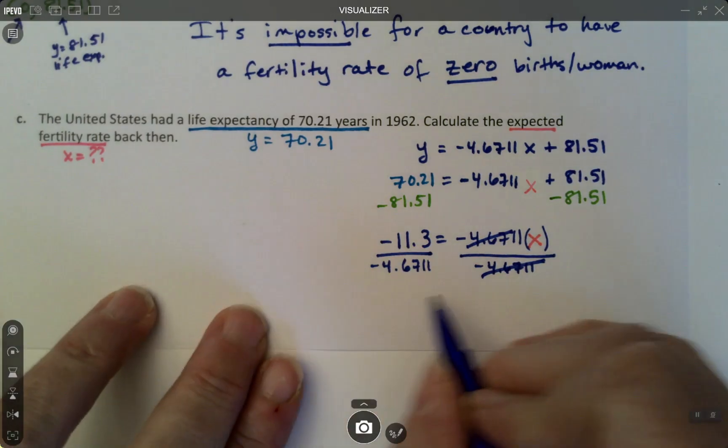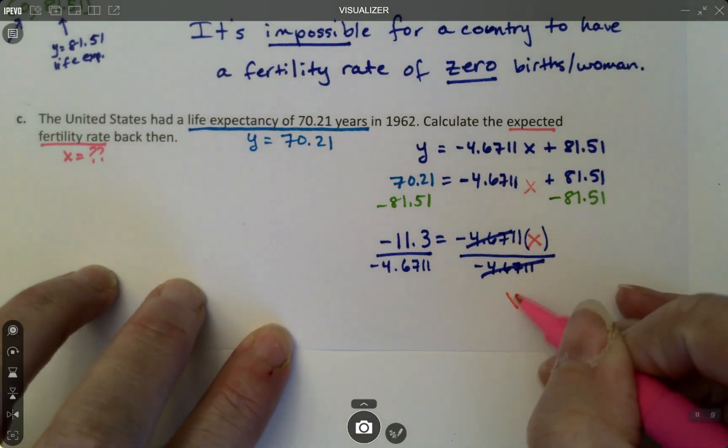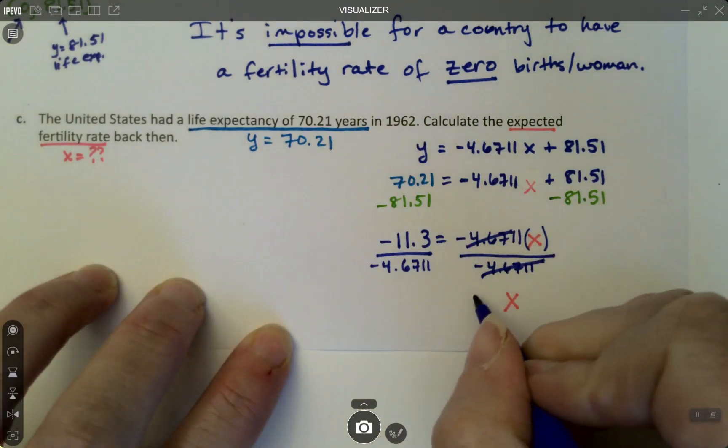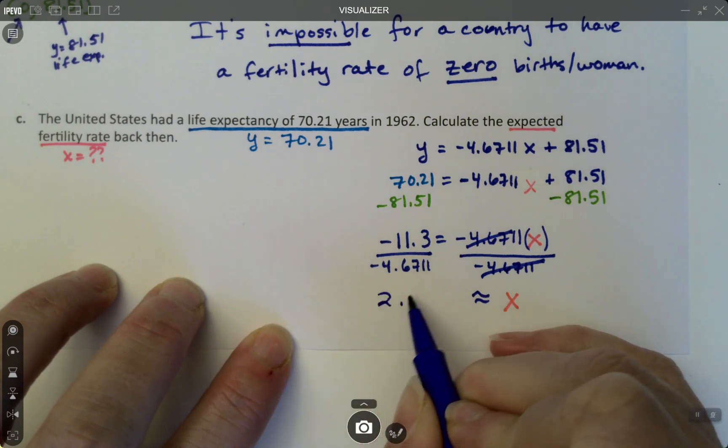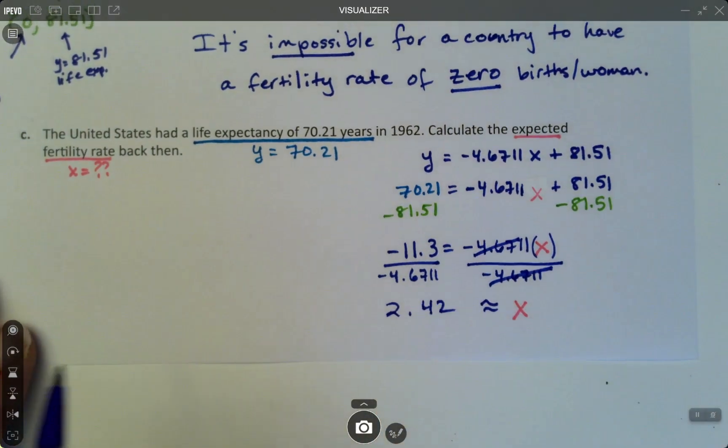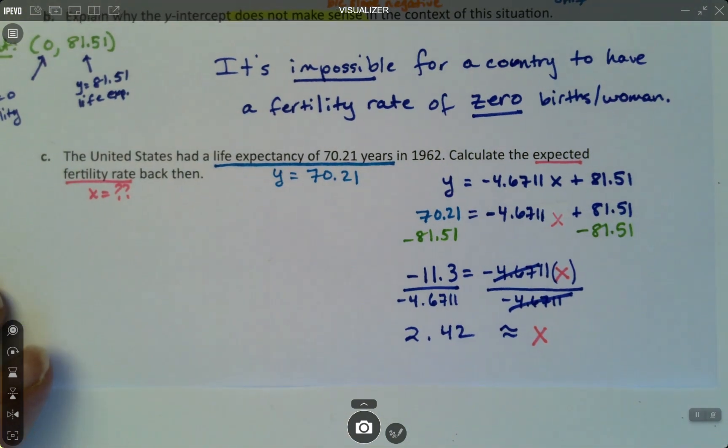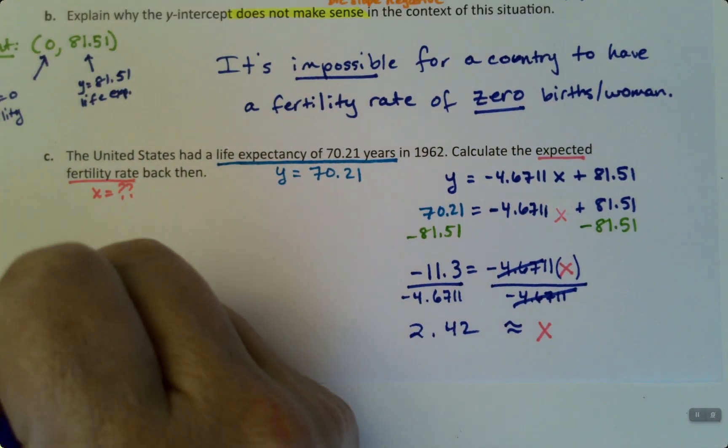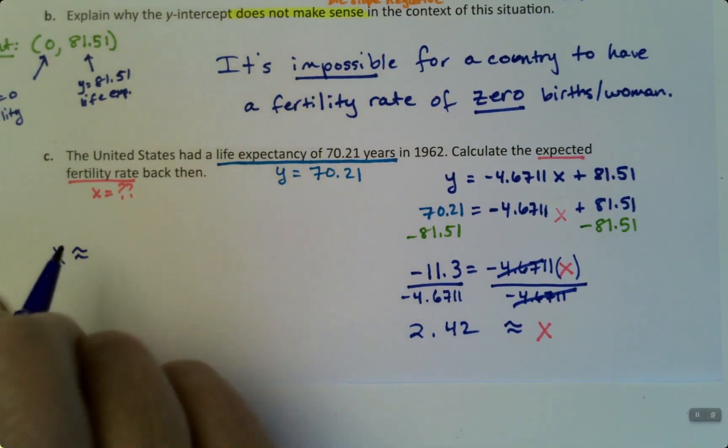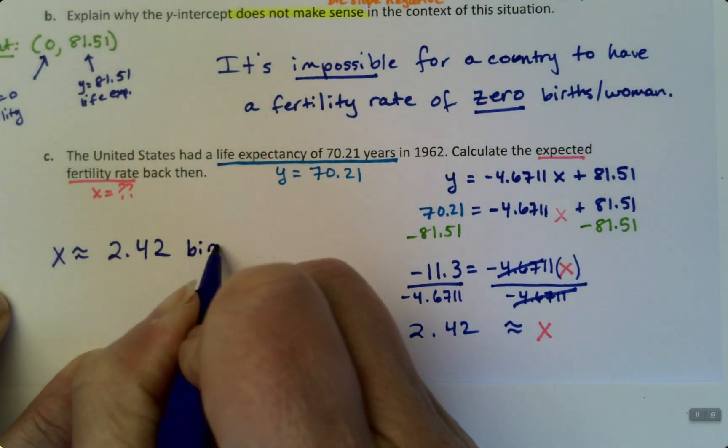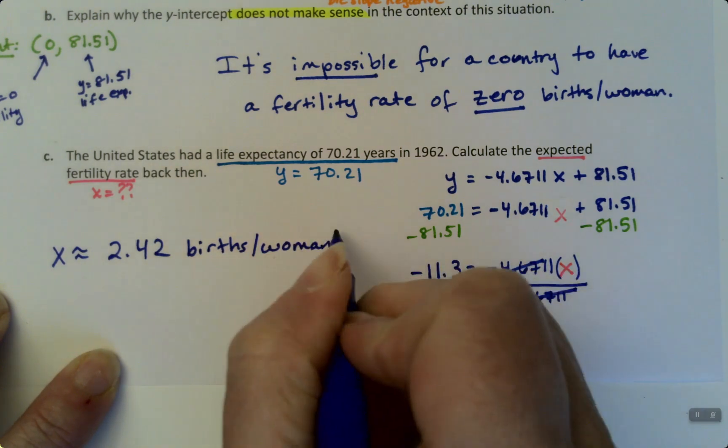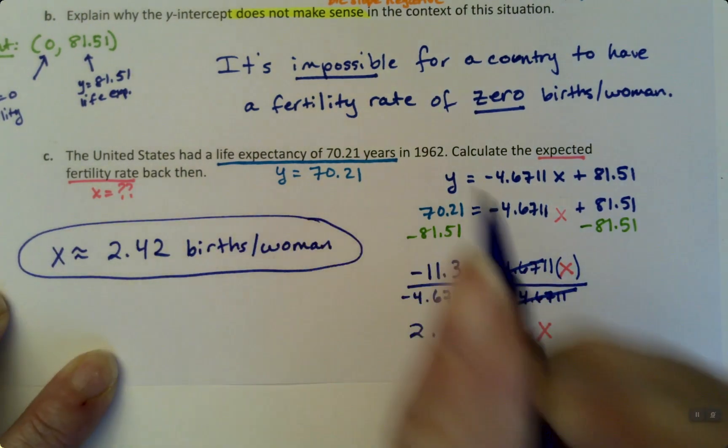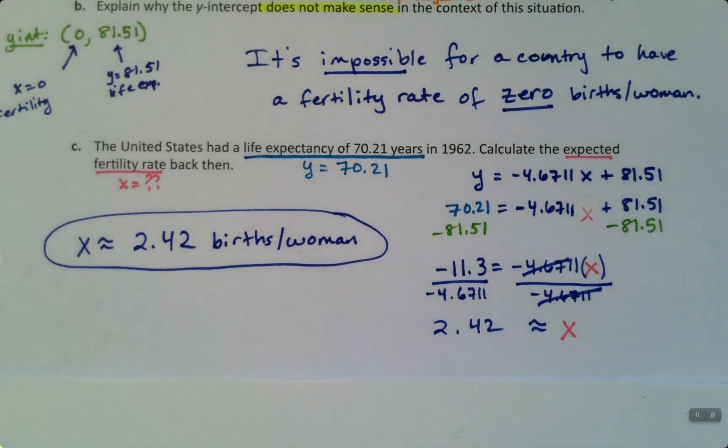So x, which is what I was looking for, x is all that's left over here, is approximately, because I'm going to round it, 2.42. So the expected fertility rate was 2.42 births per woman. Always got to include the unit if you have a unit, which we do in this case.